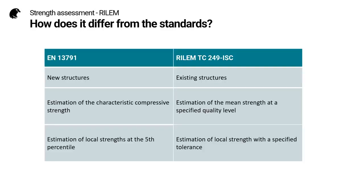The new guideline differs from the standards in three important areas. First of all, it deals with existing structures rather than looking at concrete compliance in new structures. It estimates the mean strength with a specified quality level rather than estimating the characteristic compressive strength. And when it comes to estimating strength at a particular location, whereas the standards give a fifth percentile strength, the RILEM method gives an estimation of the local strength with a specified tolerance.